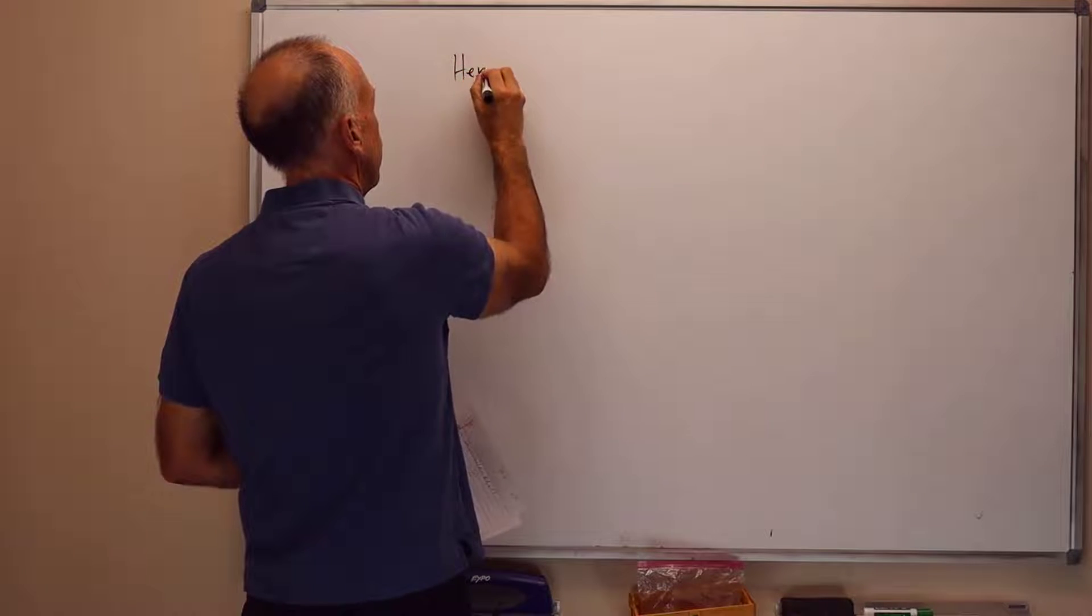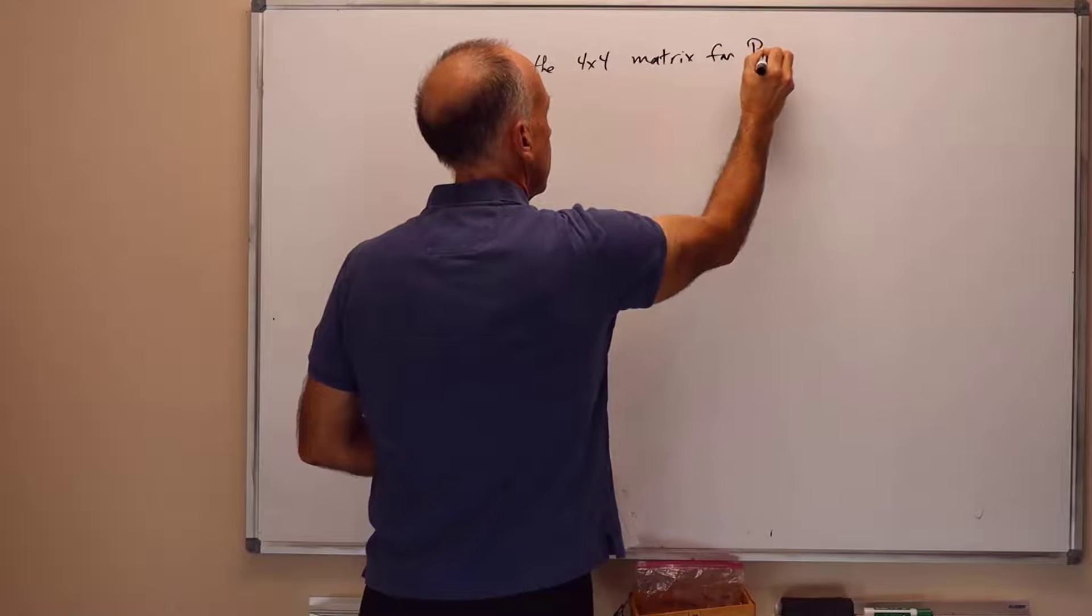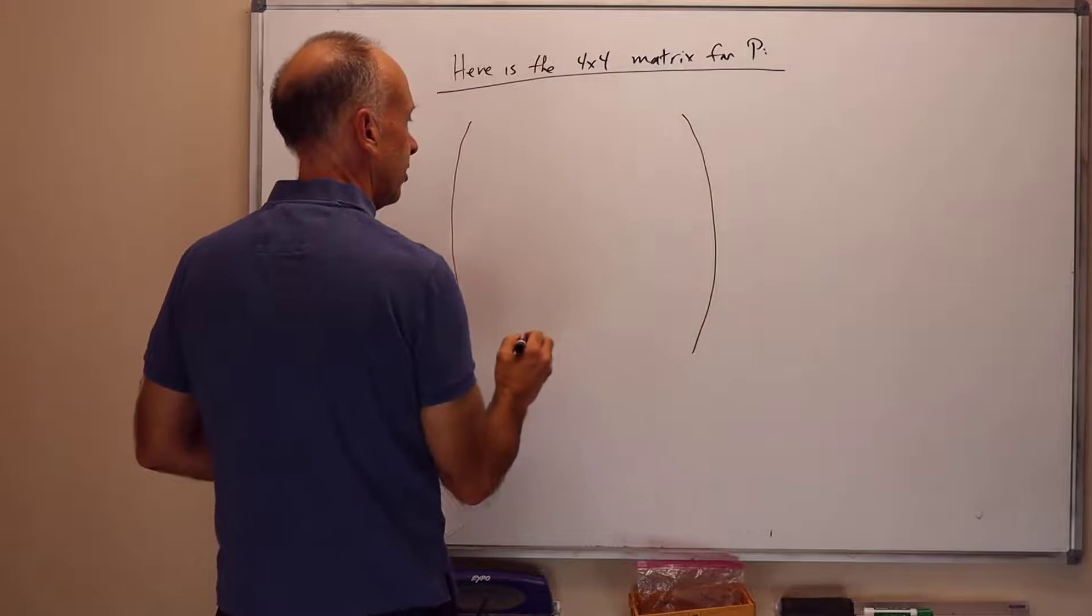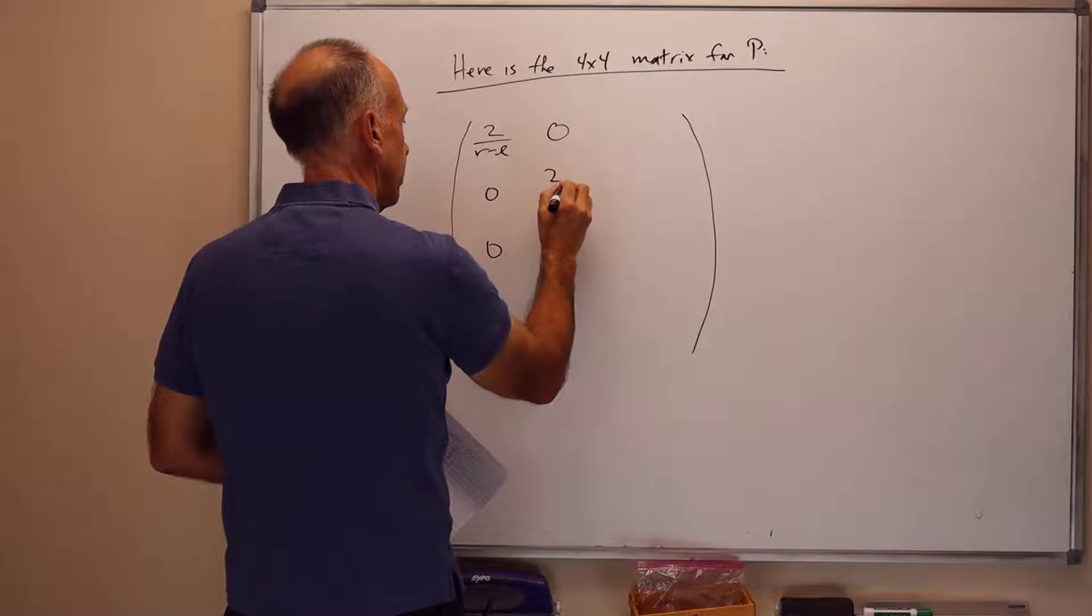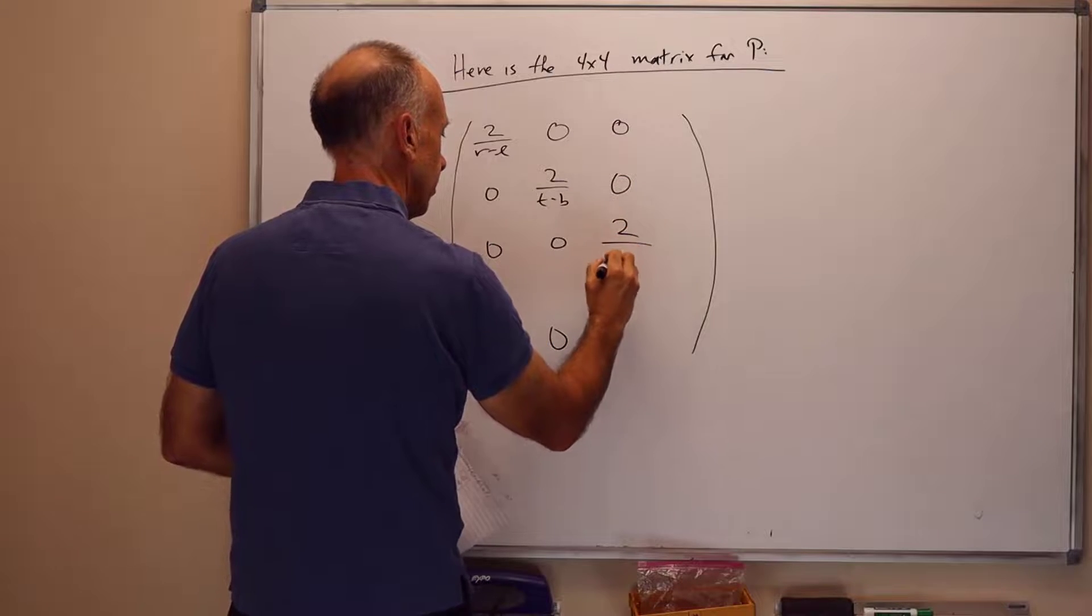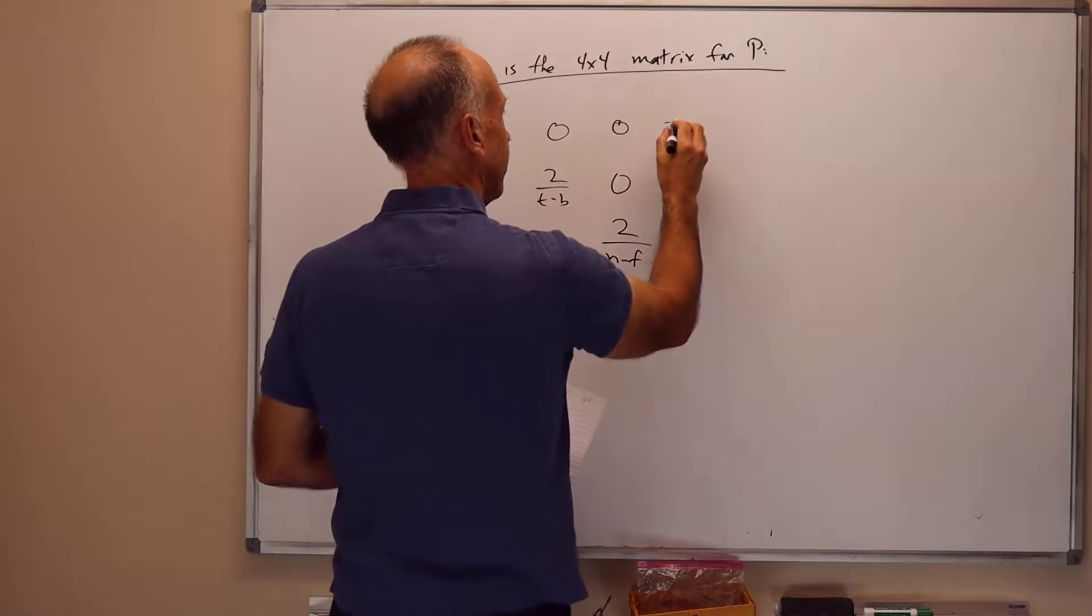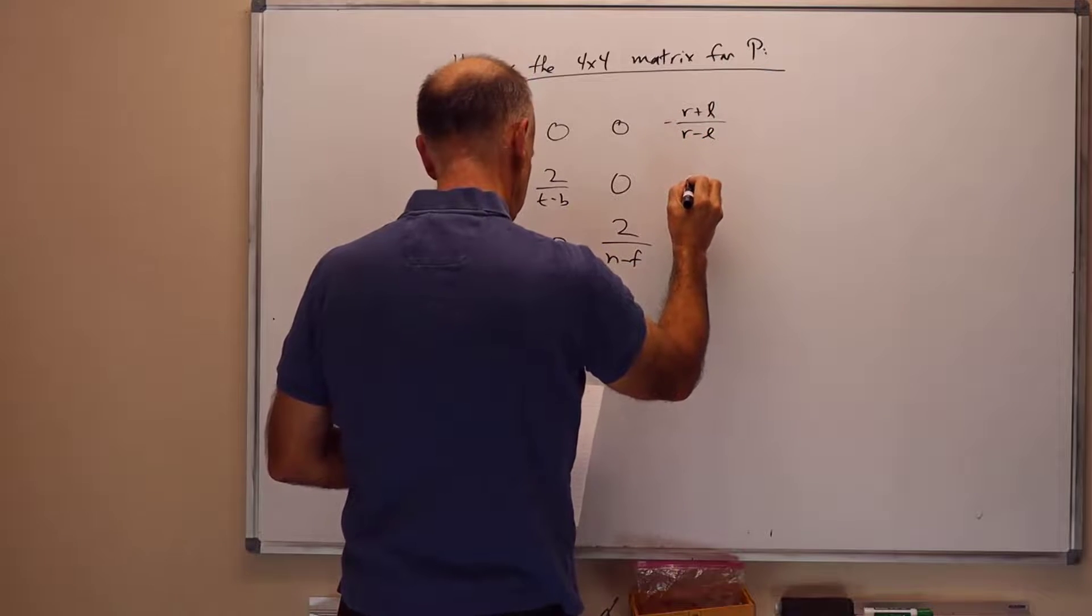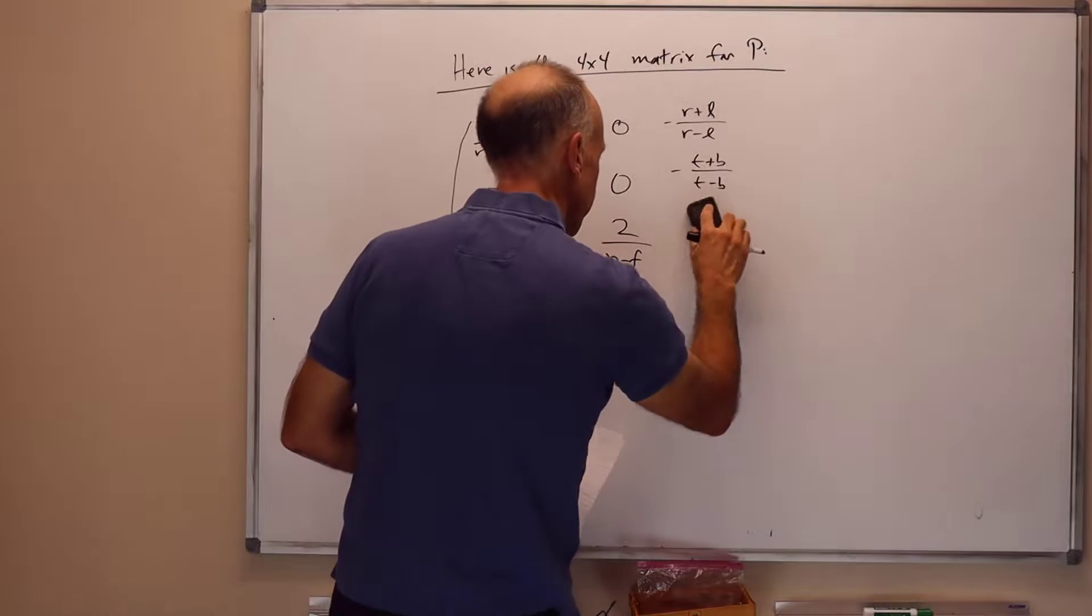So here is the 4×4 matrix for P. We use the following. First of all, we've got the scaling amounts. We're axis-aligned scaling. We scale by 2 over r minus l on the x-axis. We scale by 2 over t minus b on the y-axis. We scale by 2 over near minus far on the z-axis. And we also have to have some translation amounts.